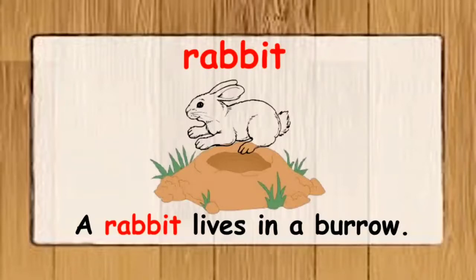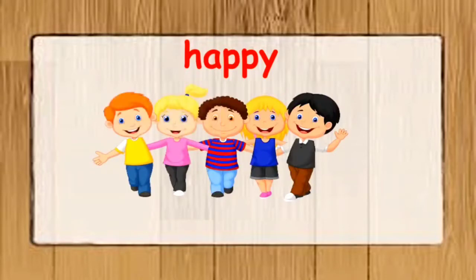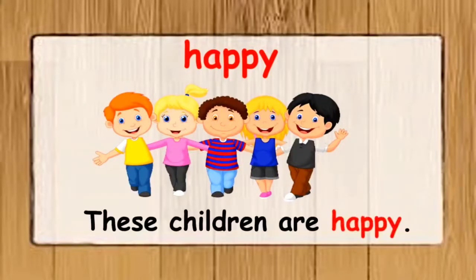You can see a burrow here where a rabbit lives. The next word is happy. The word is happy. Happy refers to feeling good and showing pleasure. I have used the word happy in a sentence: these children are happy. Look at their faces — they are all smiling because they are happy.